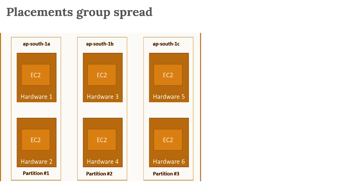In Spread placement group, all EC2 instances are located on different hardware. As you can see, we have three Availability Zones and six EC2 instances — two EC2 instances per partition. These are located on different hardware: the first in ap-south-1a, the next in ap-south-1b, the next in ap-south-1c, each on a different hardware. This means we can span across multiple Availability Zones with a reduced risk of simultaneous failure.